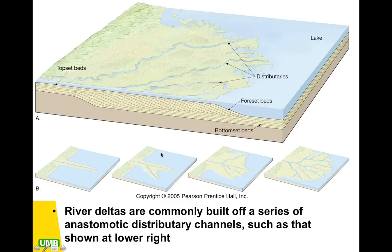So here we see that this is a delta and a fan being formed. You can see it being formed over time — the water would be flowing through here and we have deposition occurring. Over time, deposition is going to continue to occur more and more, and that's because the flow of the water is changing. The regime is changing over time.